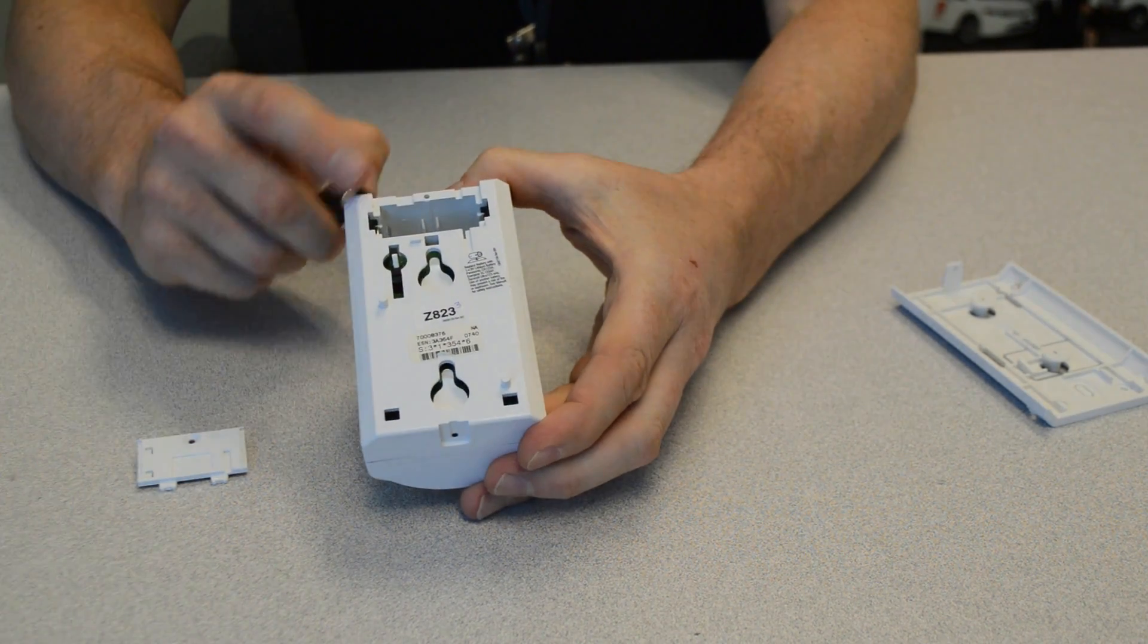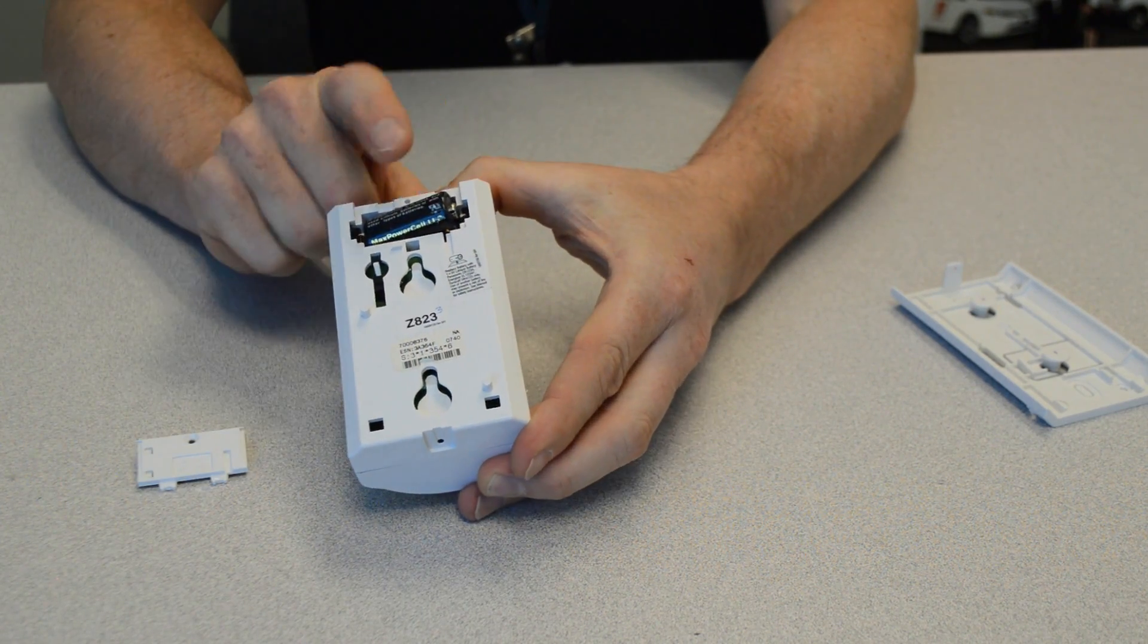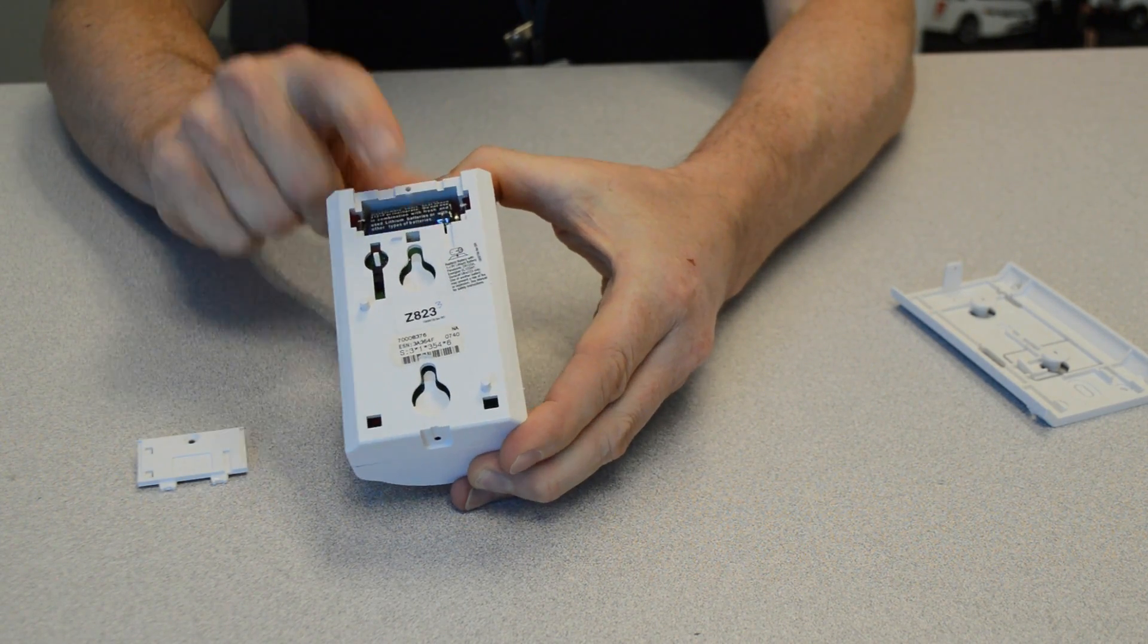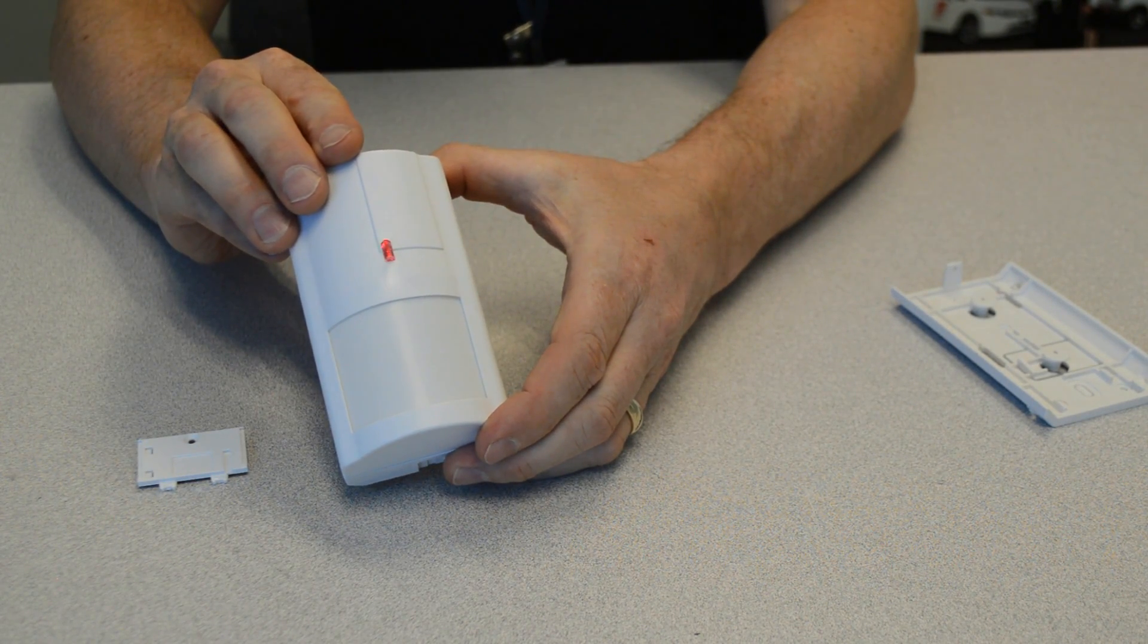Grab a new battery. Observe polarity. Positive is facing to my left. And just pop it back in. You'll probably see the LED come on on the front of the motion detector, indicating that it's getting power.